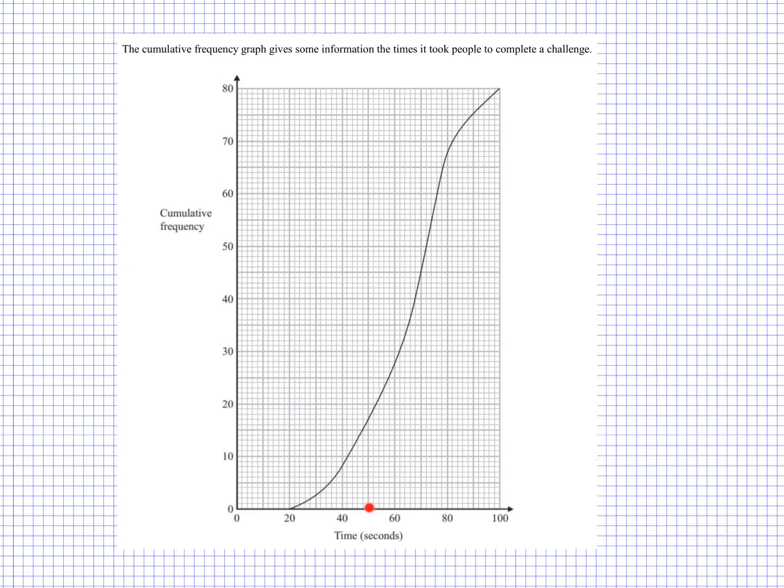And it will be at 20 for the lower quartile. We go across and read it there. And the interquartile range would be the upper quartile take away the lower quartile. Now, there is a couple of new things that we need to learn.